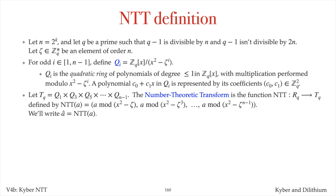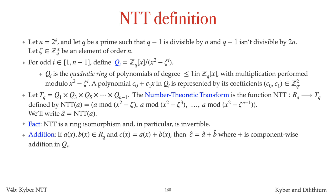The NTT of a polynomial a in Rq is defined to be the vector â, obtained by reducing a modulo the n/2 quadratic polynomials x squared minus zeta, x squared minus zeta cubed, up to x squared minus zeta to the power n minus 1. The NTT is a ring isomorphism, and so is invertible. Addition of NTT vectors is component-wise.